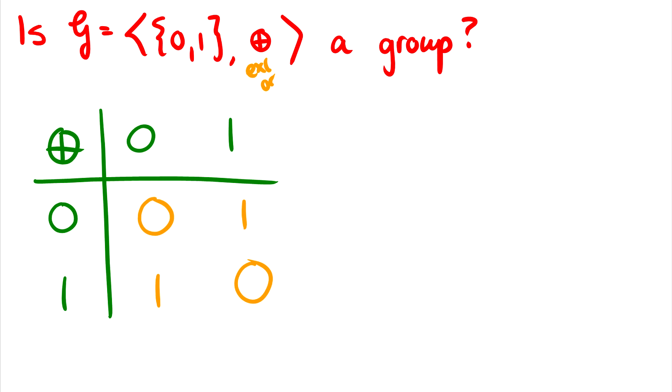So we have to check. One, is it closed? And if we take 0 and 1 and we put it with an operation and get 0 and 1 back? Of course, it's closed. We can only get 0 and 1 back. So that's good.